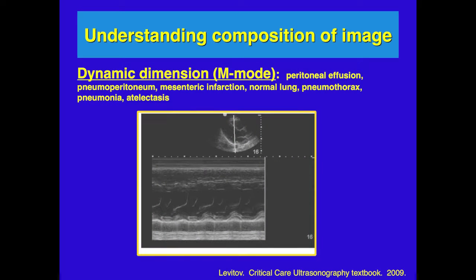M mode can be used to determine effusions and mitral valve movement. In this picture, the bright white line is the sector being analyzed, and on the bottom you see the six-second clip it produces. Where you see the M in the picture is the mitral valve moving, and you can use that to gather information about actual movement of the mitral valve and determine velocities, function, and left ventricular function.